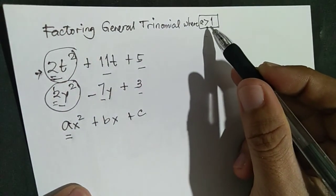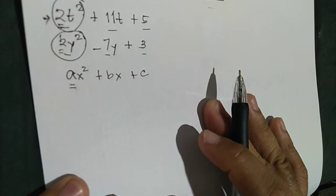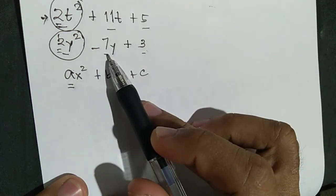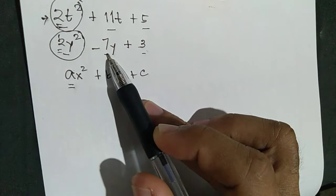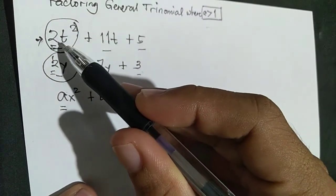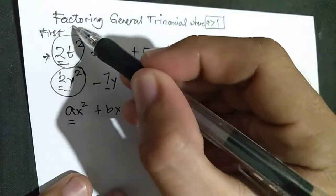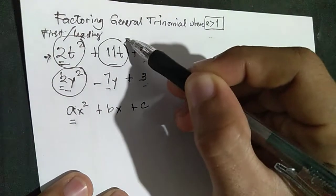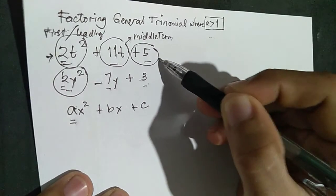The third condition: the sum of the factors of the product of the numerical coefficient of the first and last term is equal to the numerical coefficient of the middle term. To deeply understand this, we will be doing the factoring. Parts of a general trinomial: 2T squared is the leading term, plus 11T is the middle term, and plus 5 is the last term.